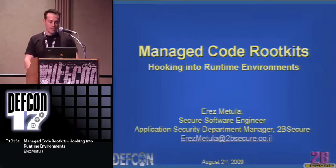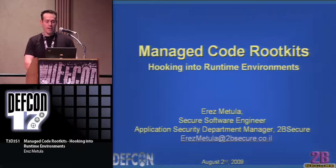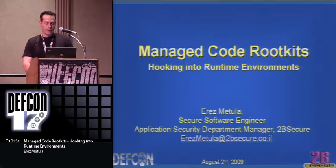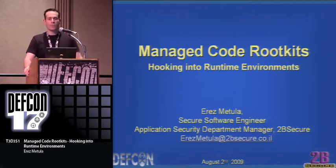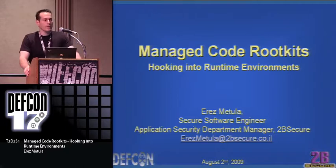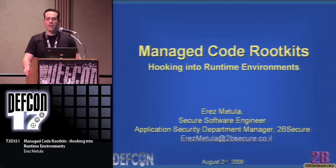This is the software engineering 101 class, which talks about hello world in Java. What does the following code do? It's supposed to print the string hello world. Let's run this code and see what happens. I have this HelloWorld.java class, and when I run it, it gives a strange behavior — the string that was supposed to be printed, hello world, was printed twice.